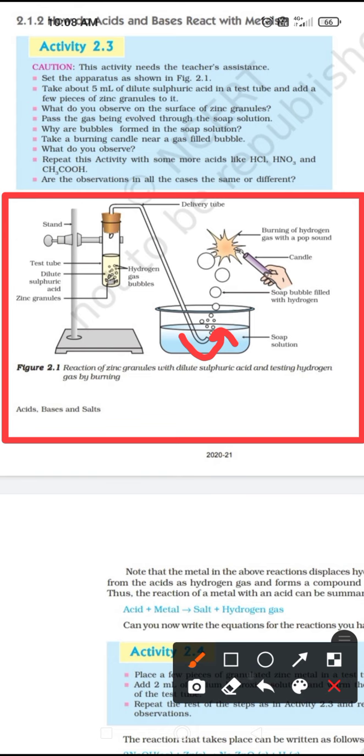For that, we will take a burning candle near this gas. This is the burning candle. As we take this burning candle near the gas, there will be a small explosion with a pop sound. Now, this pop sound is produced because of burning of hydrogen gas in the air.